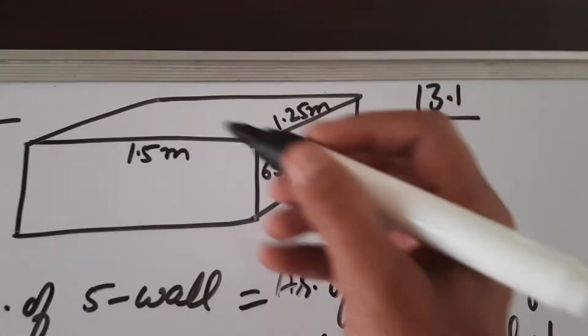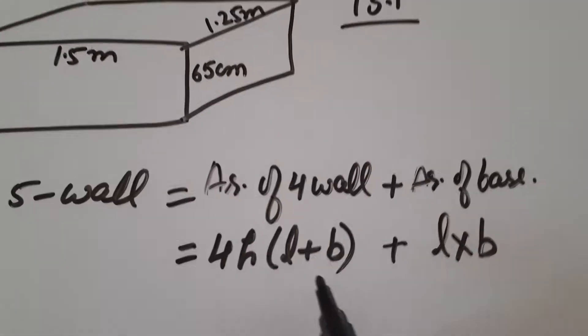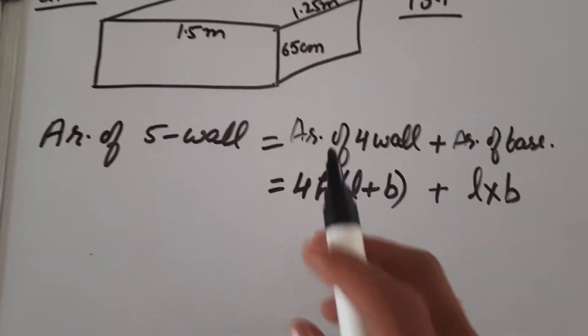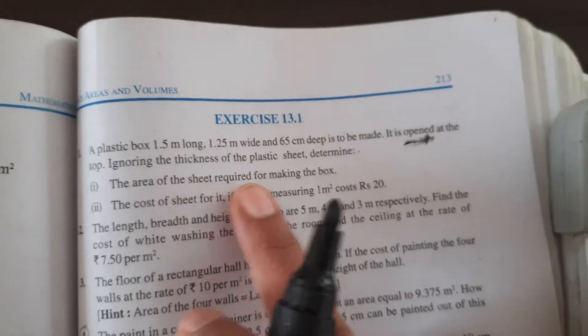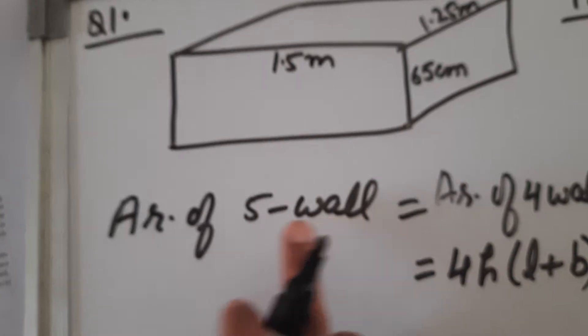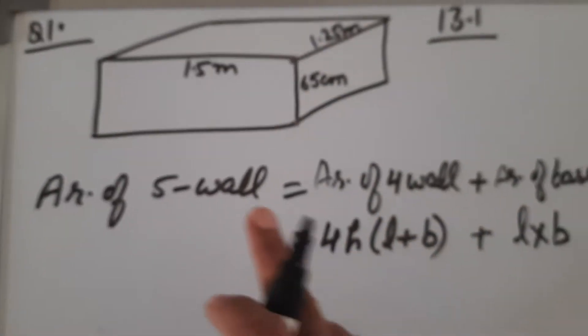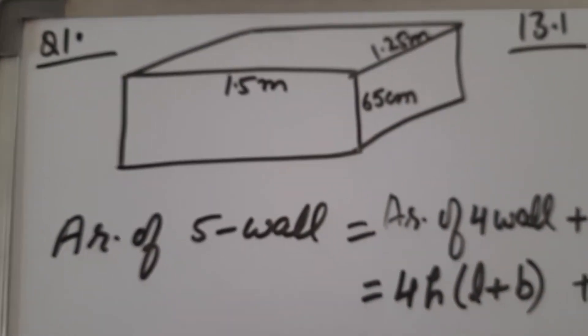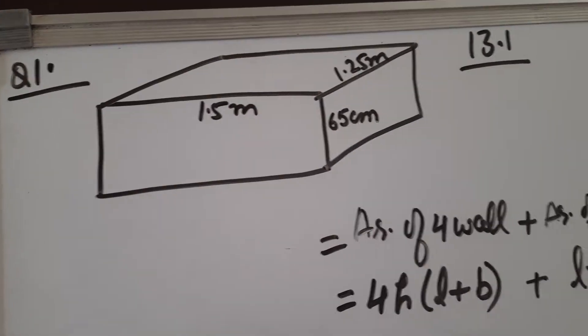Now you just have to put the values given in the question — the dimensions — into the formula and get the area. While writing the statement, instead of 'area of five walls' we will write 'the area of the sheet required for making the box,' because the sheet is required only for five walls.